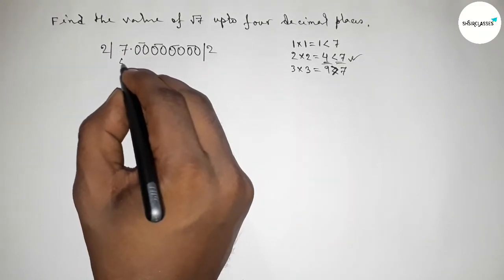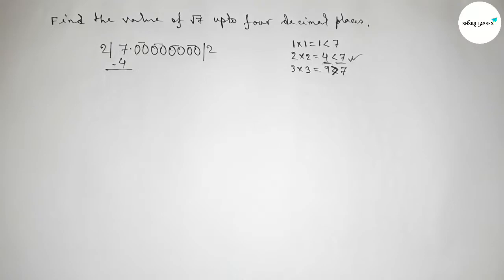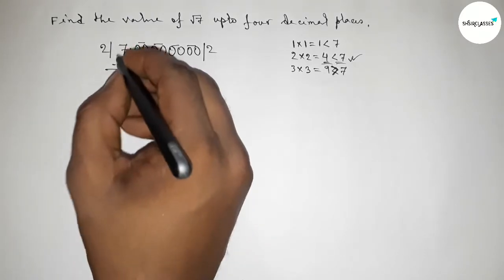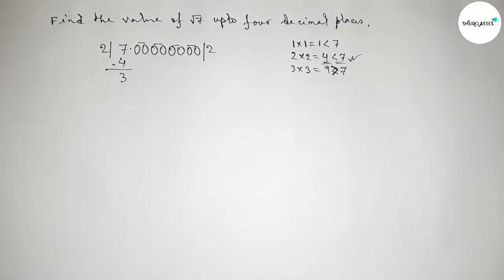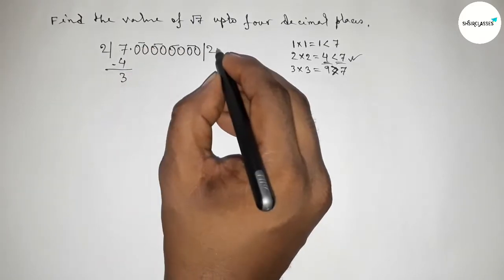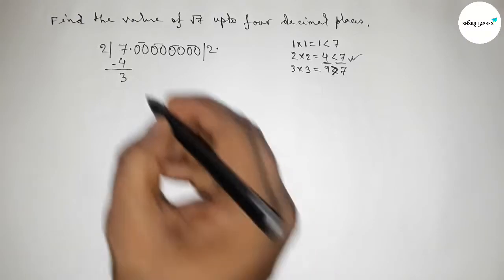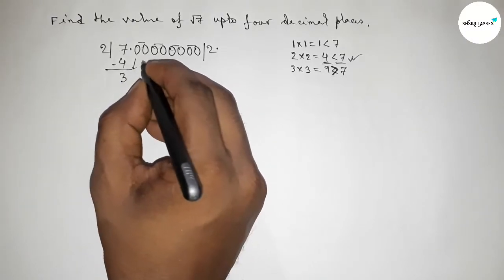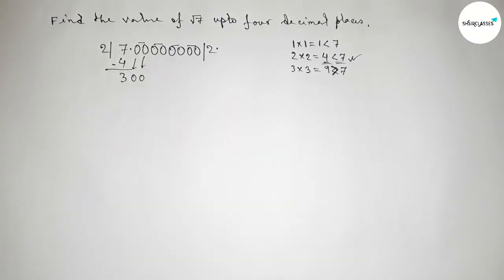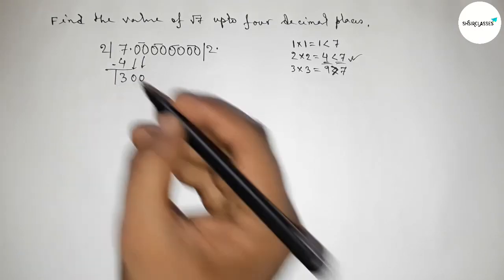Taking 2, and 2×2=4. Subtracting: 7 minus 4 equals 3. The decimal point is placed here. Now bring down the first pair of zeros.